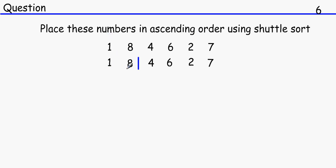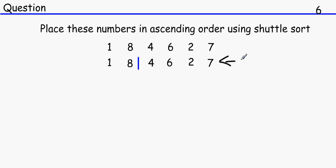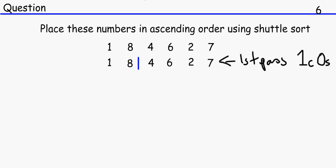So one and eight — this is the first pass by the way. One and eight, that's fine. So that's the first pass done. It will be beneficial to record one comparison and zero swaps, because you've only compared one pair of numbers.